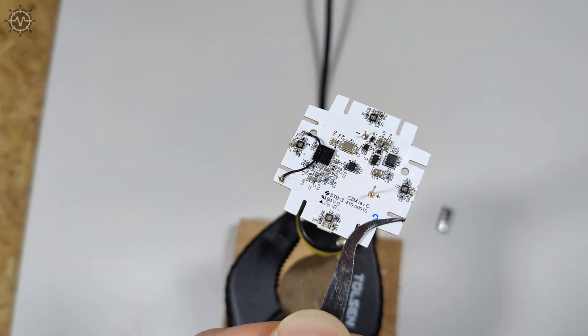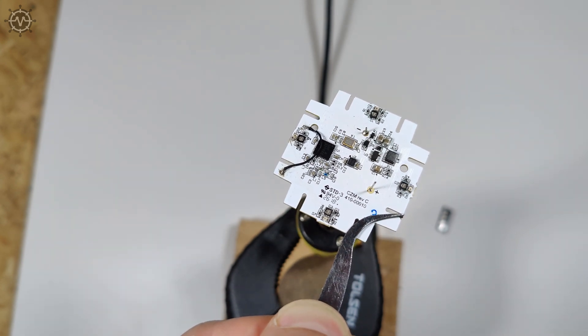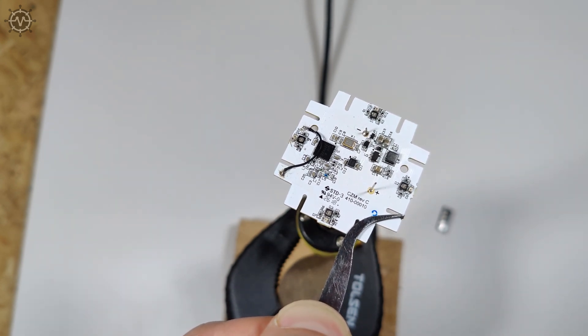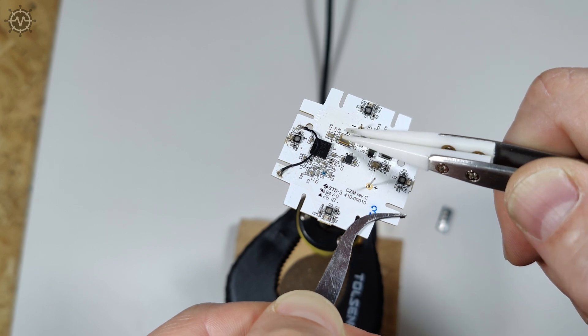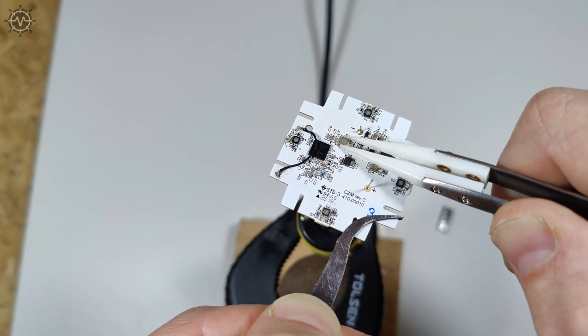I heated the circuit board a little, precisely the place where the quartz crystal was soldered on the other side, until the solder melted, and I could easily remove the crystal with tweezers.